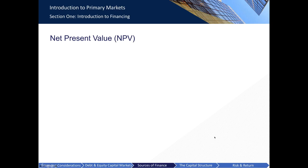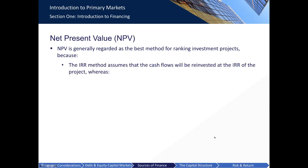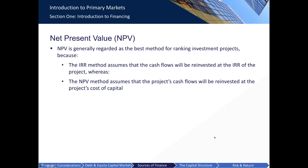In summary, net present value is generally regarded as the best method for ranking investment projects, because the IRR method assumes that cash flows will be reinvested at the IRR of the project, whereas the NPV method assumes cash flows will be reinvested at the project's cost of capital. How to calculate the cost of capital will be discussed in more detail in Module 4. You have now completed Module 3; please proceed to the concept checking questions.